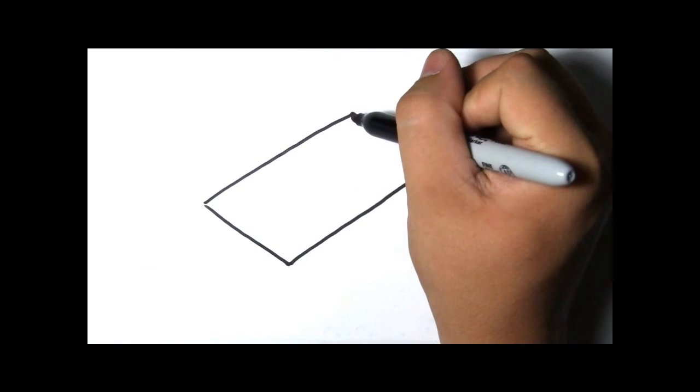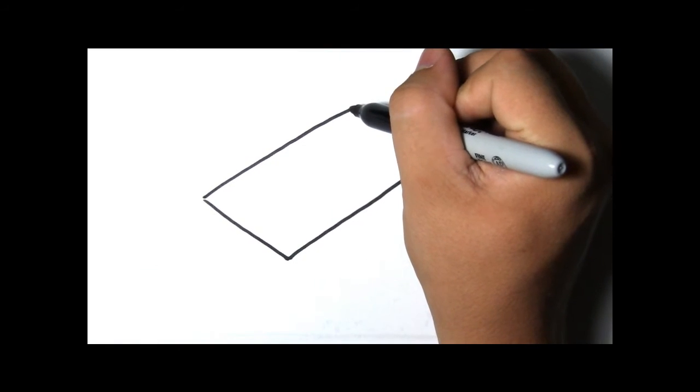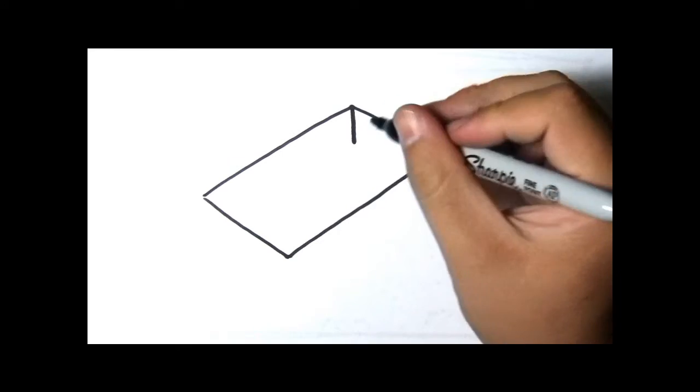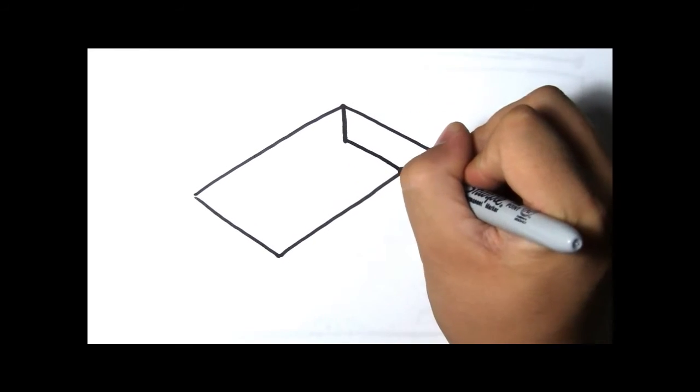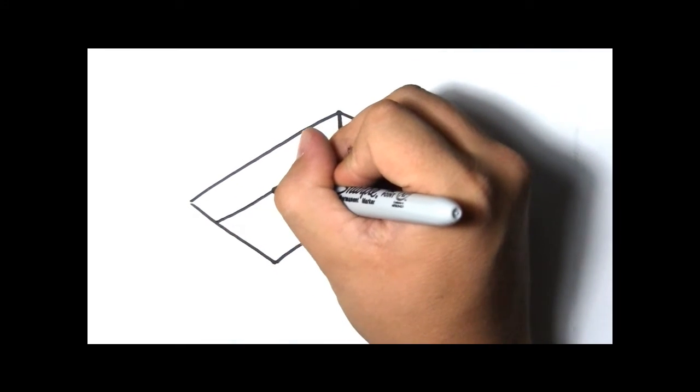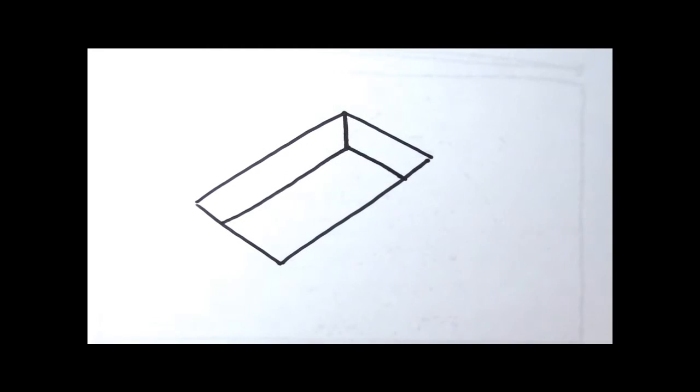Once we draw a rectangle, on the top corner we're going to draw a line that comes in. And then we're going to go to the ends. Just like that.